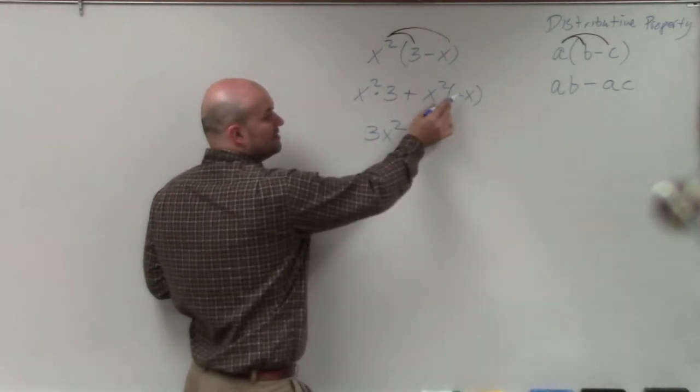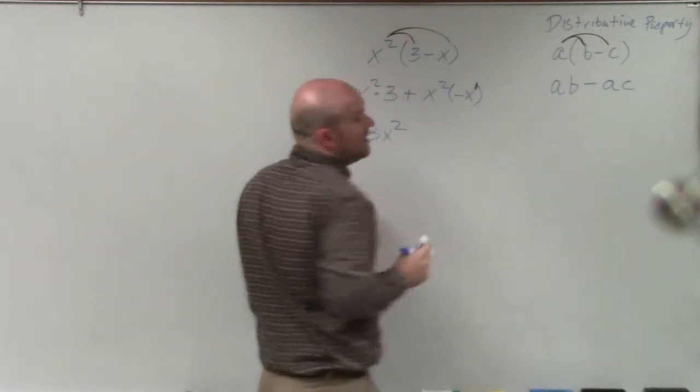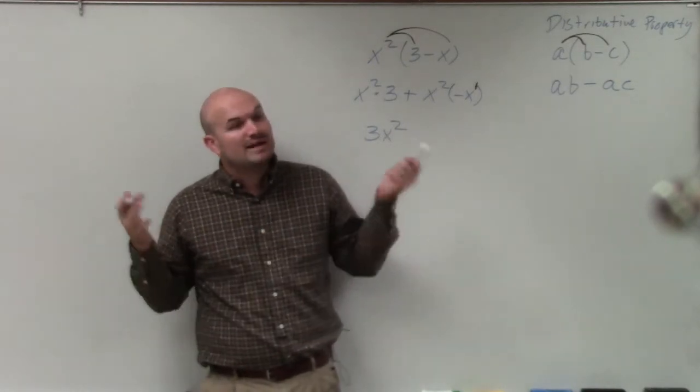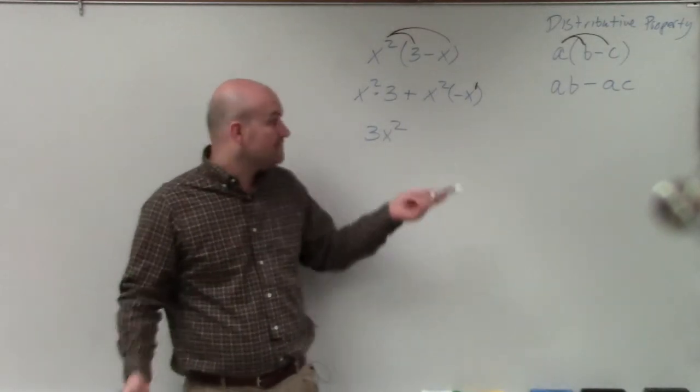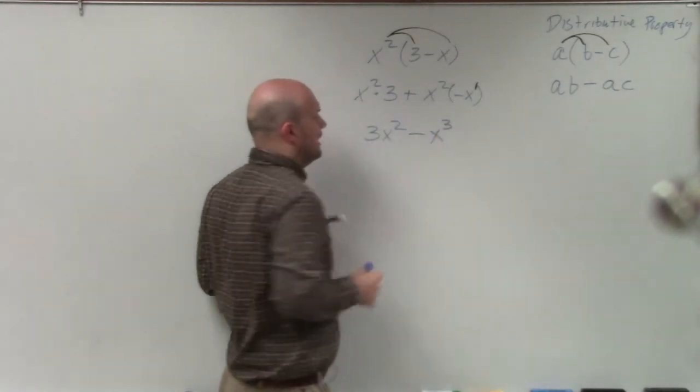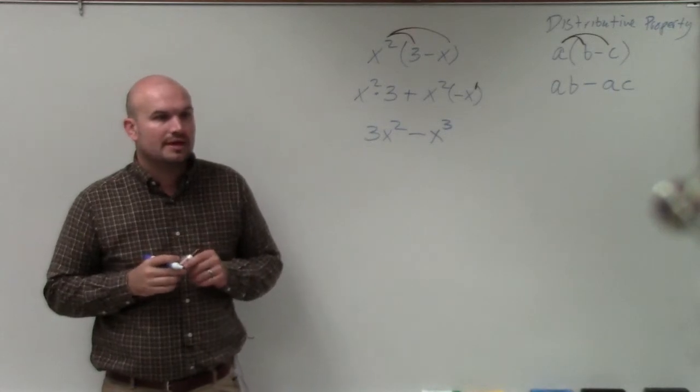And then here, negative x times x squared. Remember that this does have a 1 as a power. So remember, when we multiply, we add the powers as long as the base is the same. So therefore, this becomes a negative x cubed.